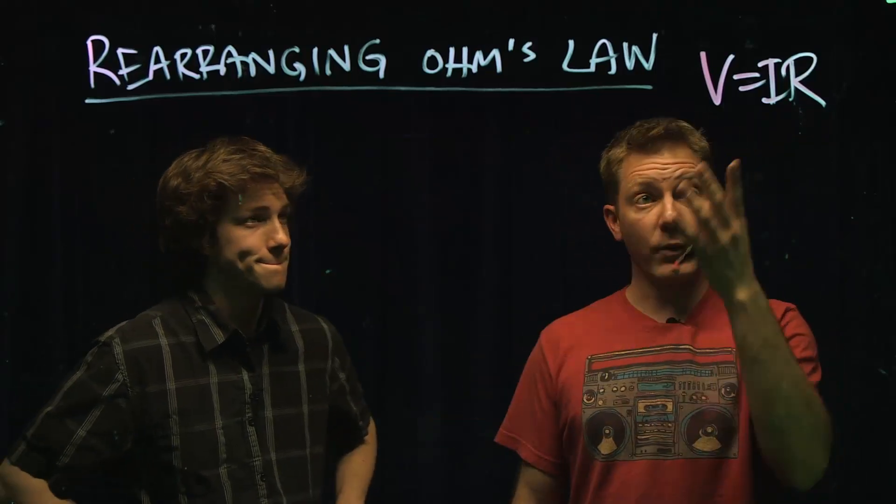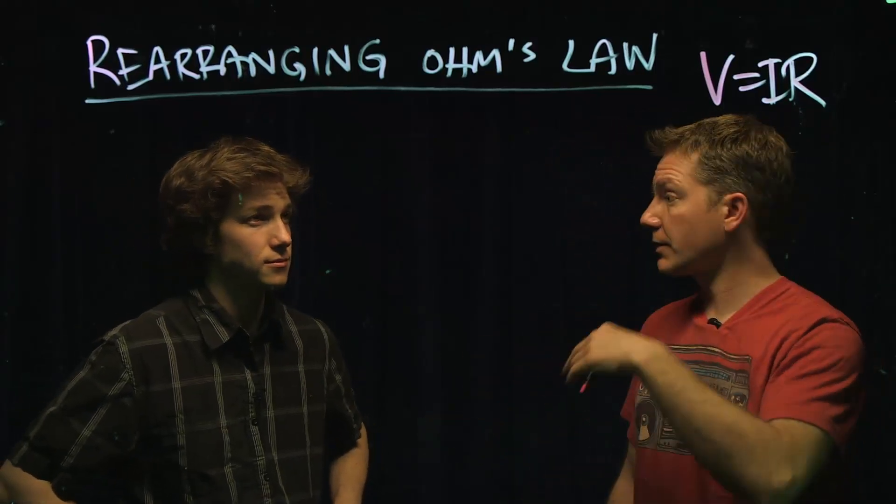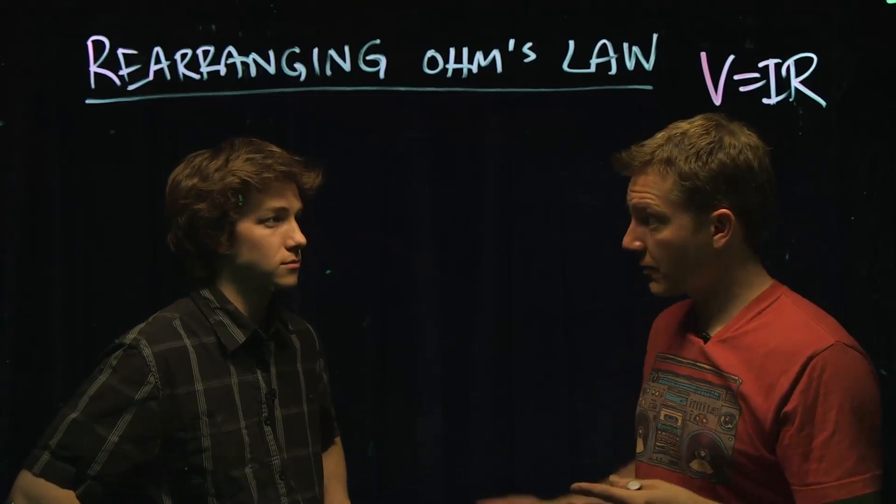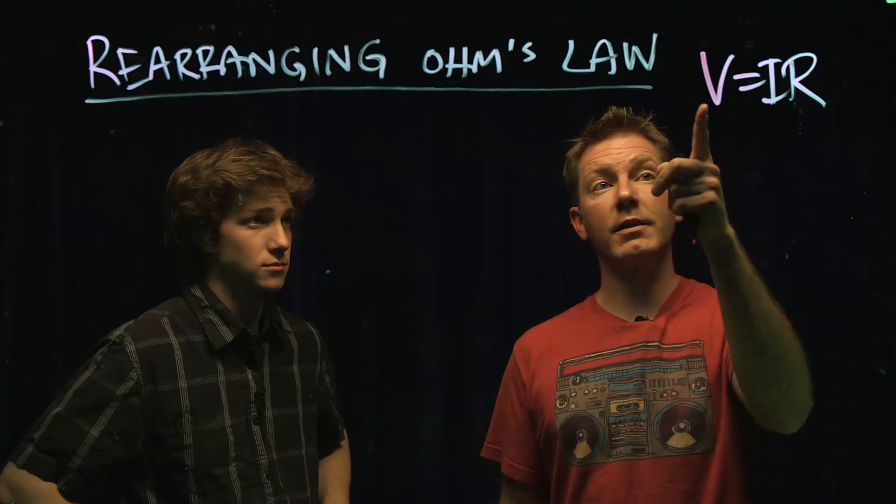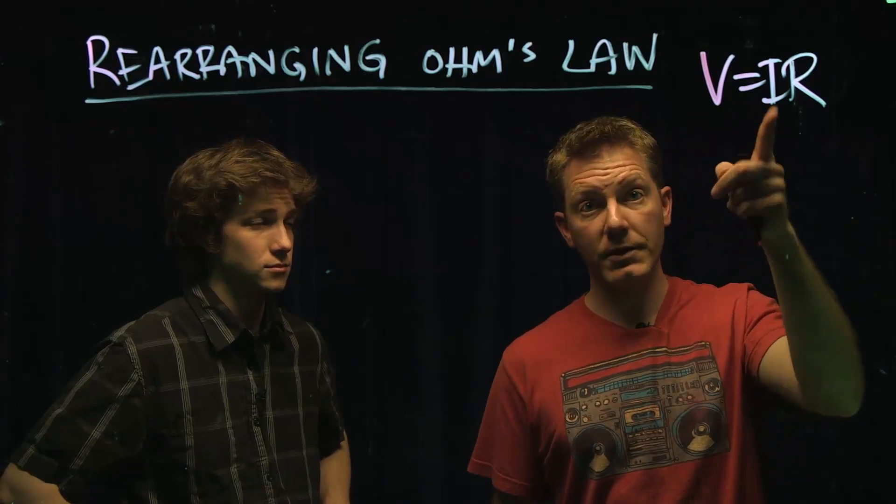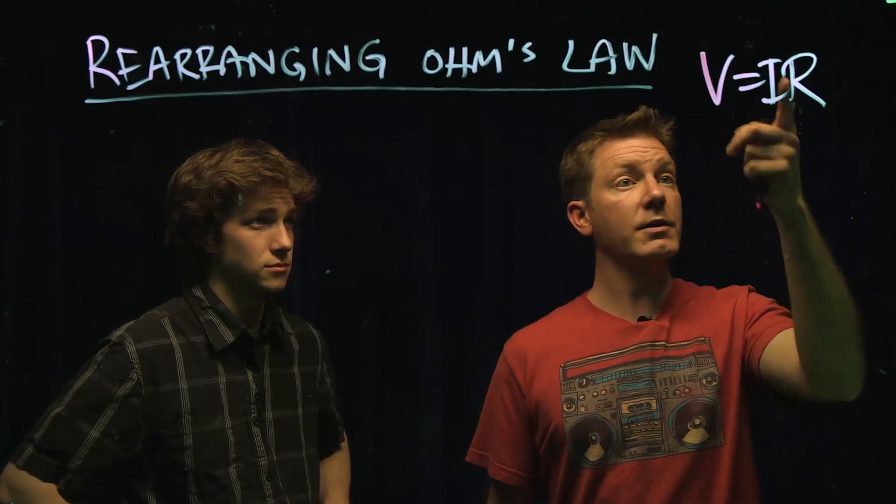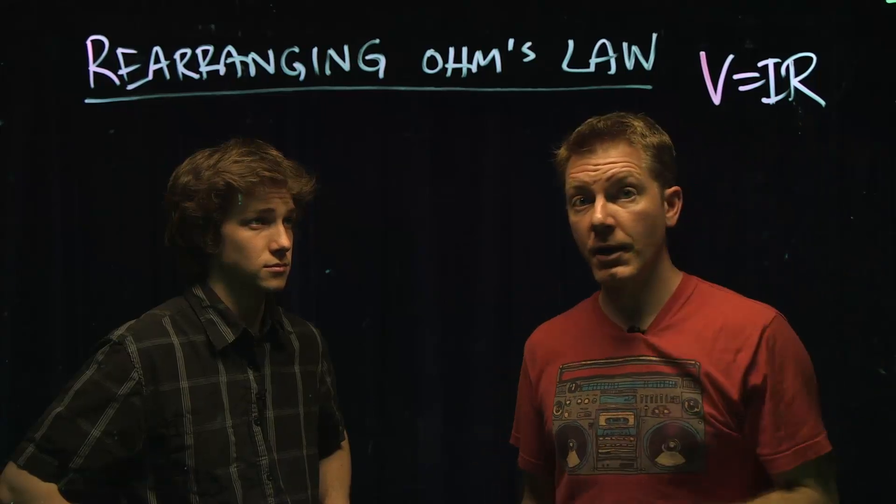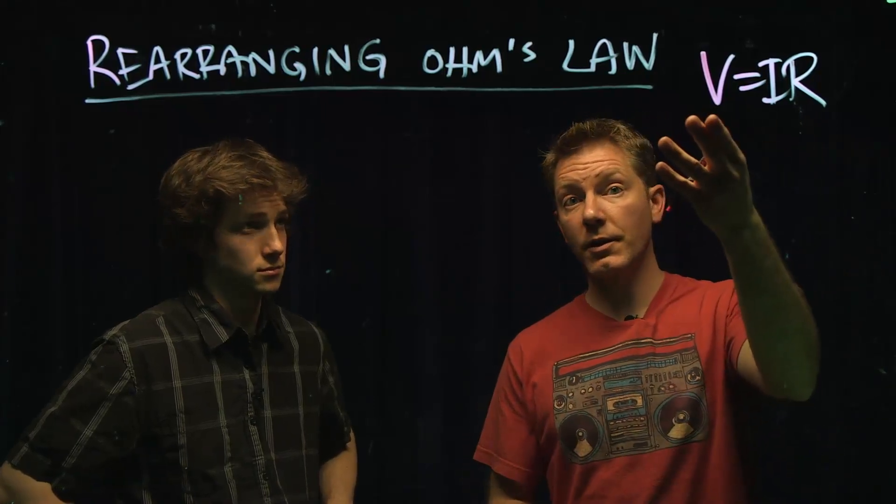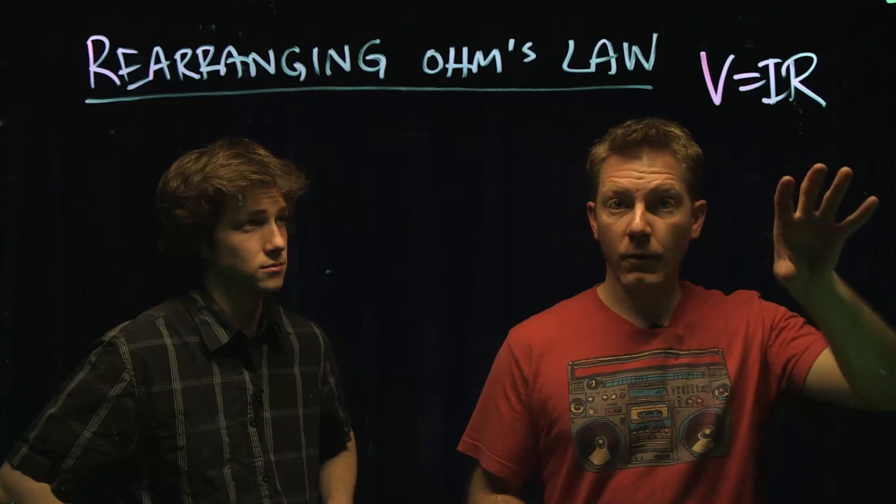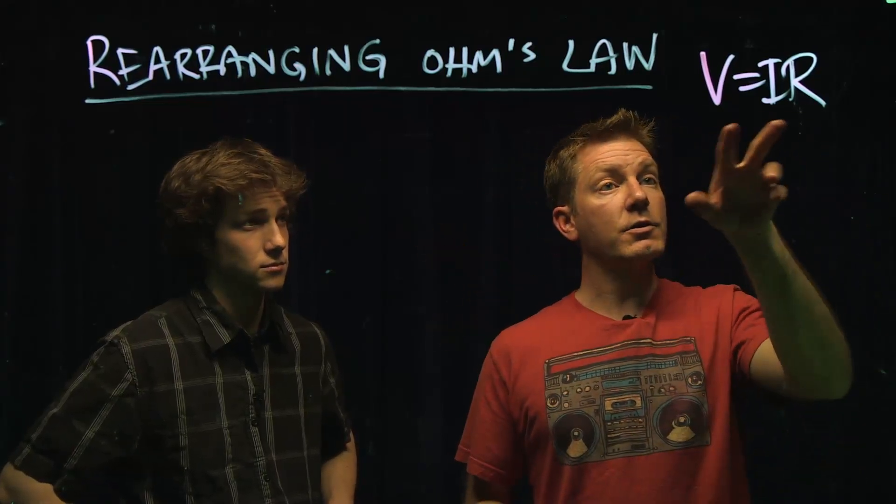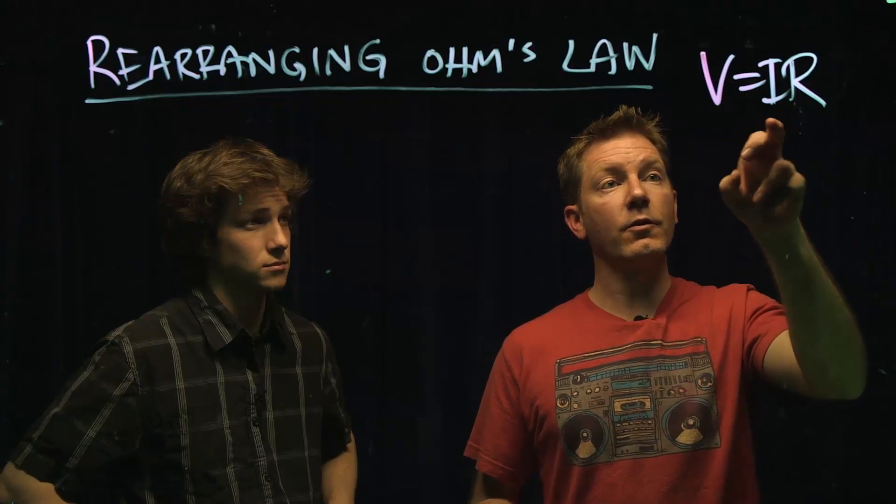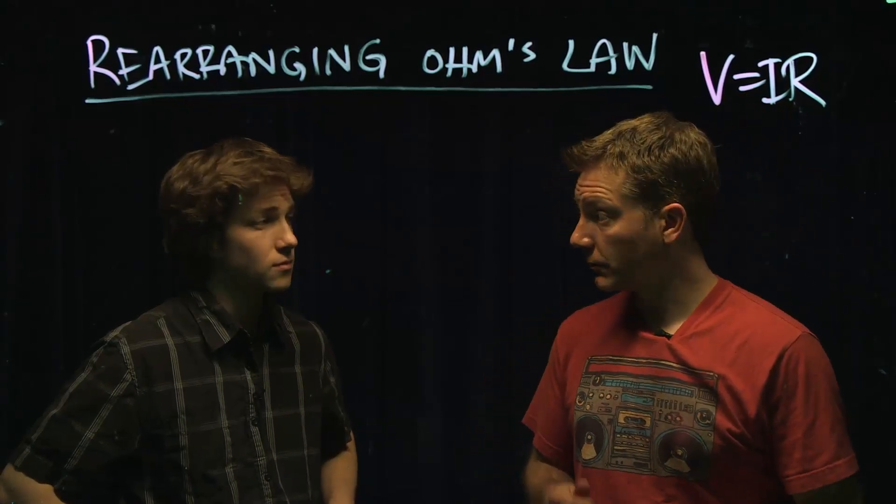The way that all of these problems work is they give you two and they make you find the third one. So the easy one to do, without any rearranging, is they tell you what the current is, they tell you what the resistance is, find the voltage. So that's easy because voltage is already here. So what you don't know is on the left side, what you do know is on the right side. You just put in the stuff you do know, and then out pops what you don't know.